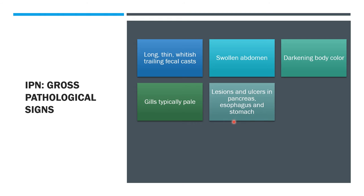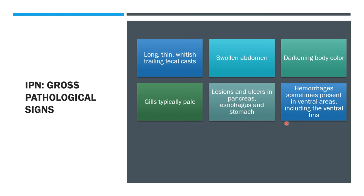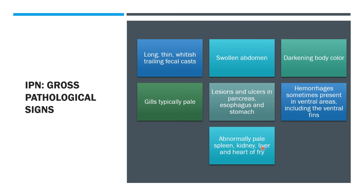There are also lesions and ulcers in the pancreas, esophagus, and stomach. Hemorrhages may be present in ventral areas including the ventral fins. There is an abnormally pale spleen, kidney, liver, and heart of the fry.